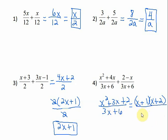And in the denominator, there's a greatest common factor of 3. So the x plus 2's cancel, and my answer is x plus 1 over 3.